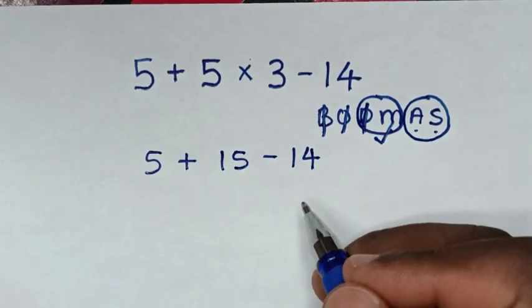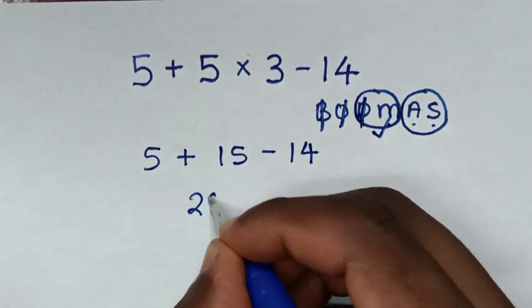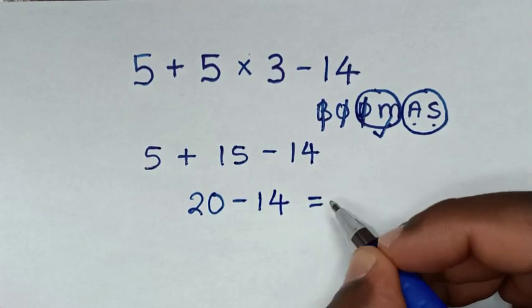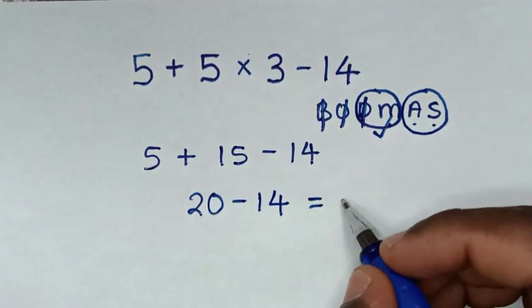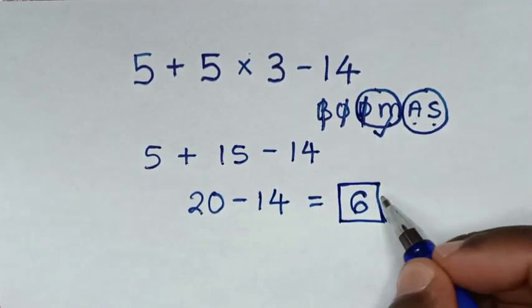So I'll deal with this addition: 5 plus 15 is 20. Then 20 minus 14 equals 6. Therefore, 6 is our final answer.